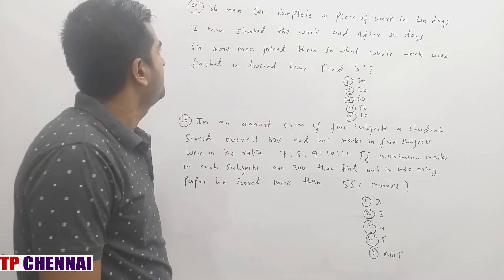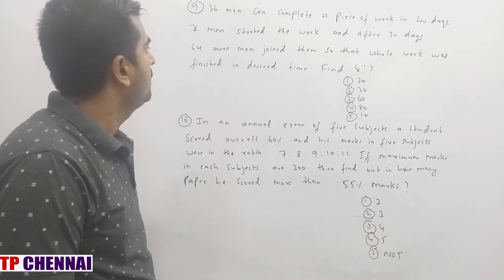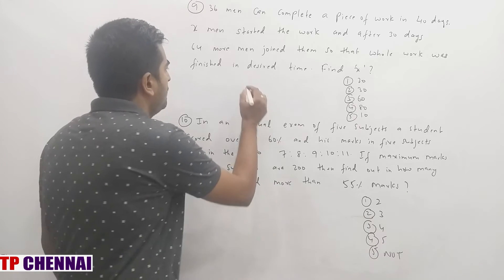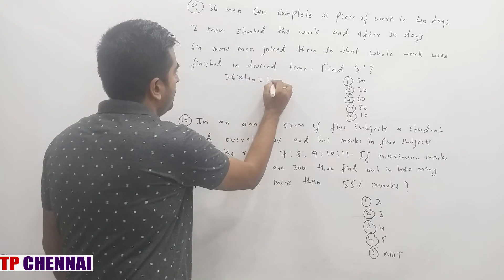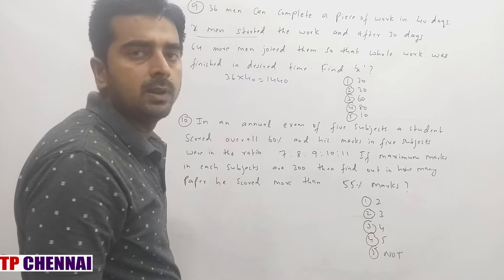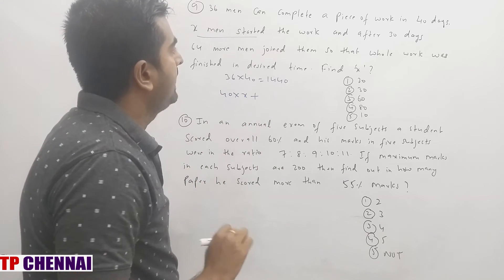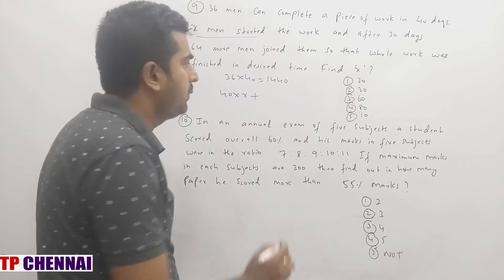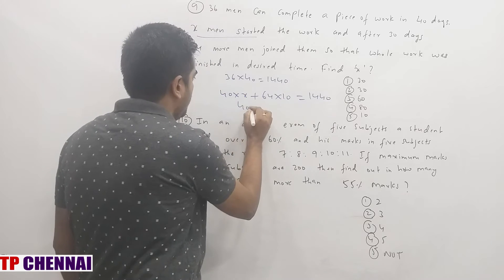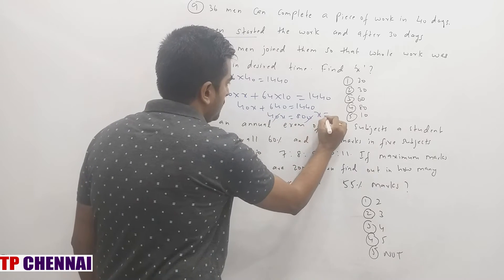Ninth question: 36 men can complete a piece of work in 40 days. X men started the work and after 30 days 64 more men joined them so that the whole work was finished in the desired time. Find the value of X. Total work = 36×40 = 1440. X men work for 40 days, and 64 men joined for the last 10 days: 40X + 640 = 1440, so 40X = 800, X = 20, which is the first option.